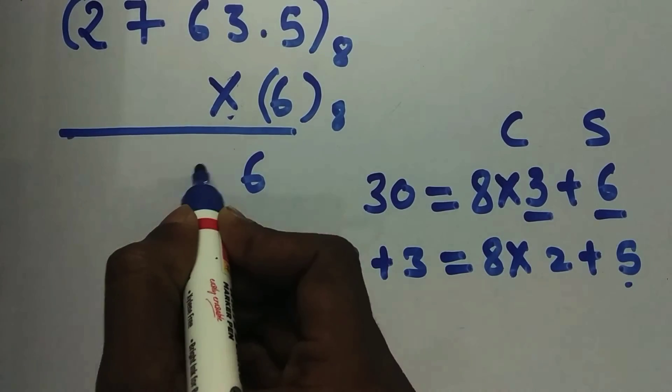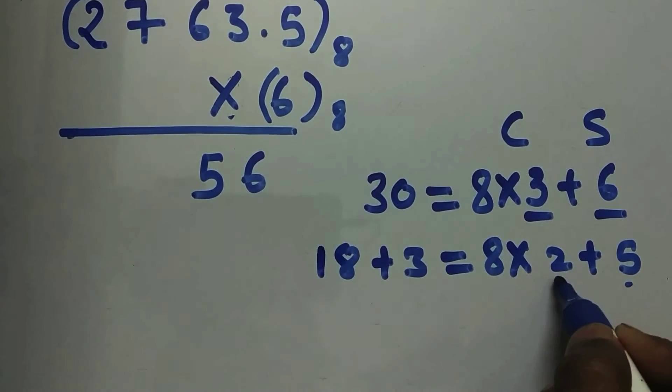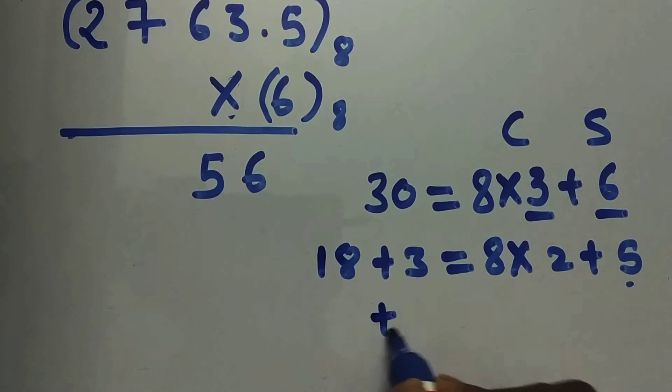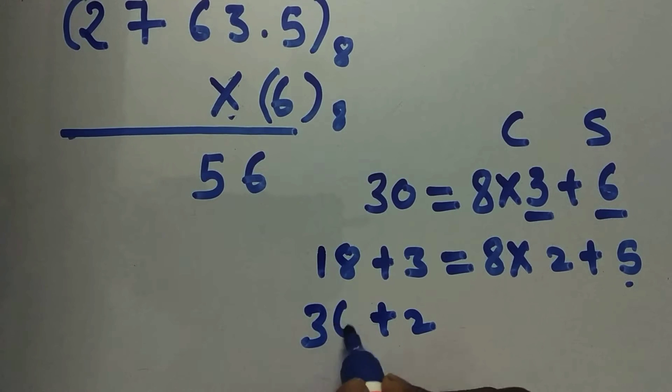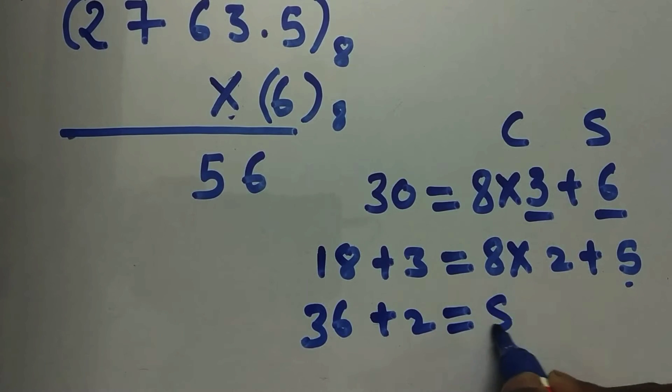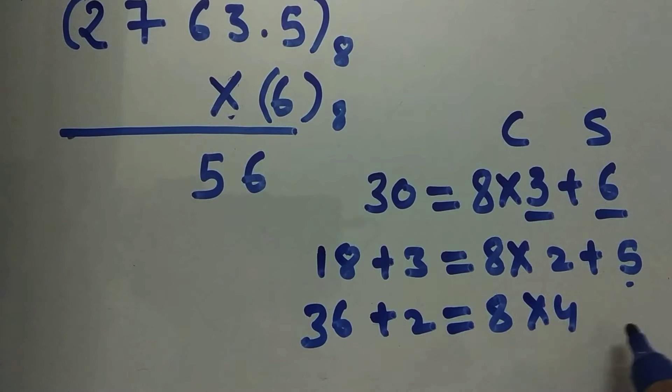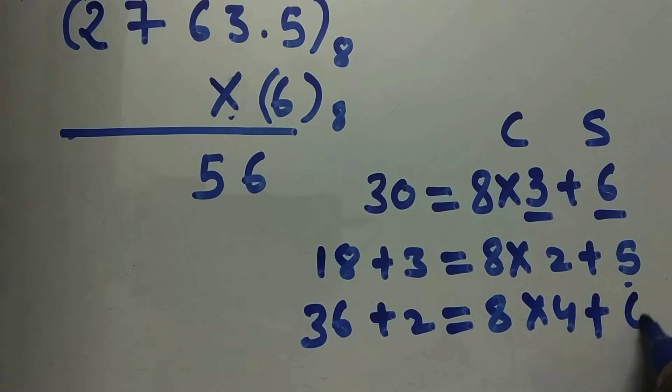Now let's add 2 with the product 6 into 6, it's 36. So 36 plus 2 is 38. So 8 into 4, so 32 plus 6. So 6 is the sum and 4 is the carry.